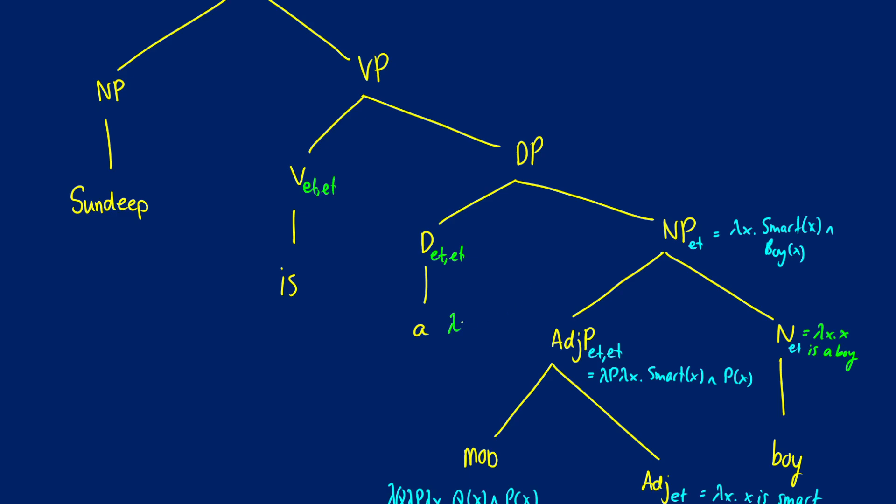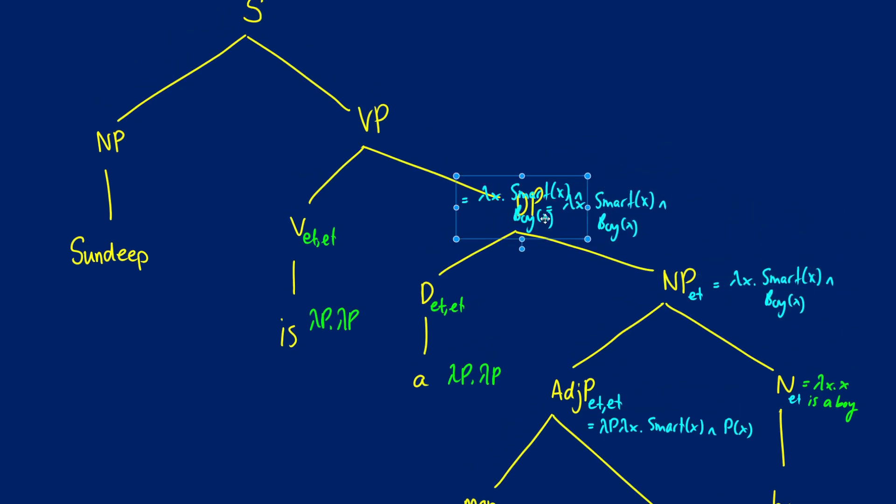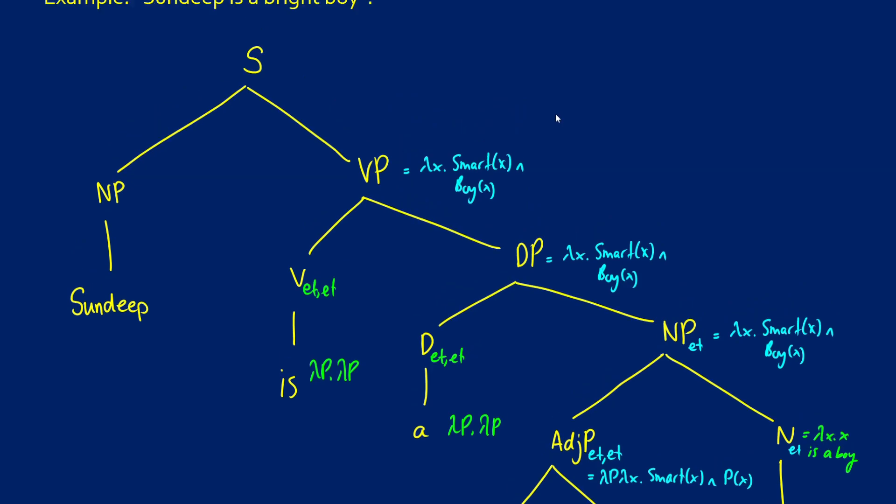Now, I do want to do one more because we haven't done a yet in this case, but just to show you what this is, this really is going to act just like the copula is. We're just going to say that this is lambda P dot P, just like is, pump out the same thing. Because what a says, it just says at least one. It just establishes existence. Sundeep is smart boy has the same effect as Sundeep is a smart boy. It's just for grammatical purposes that don't need to be encoded. So as this goes through, this means that these lambda P's dot P's are going to be spitting out the same thing as we go up the chain.